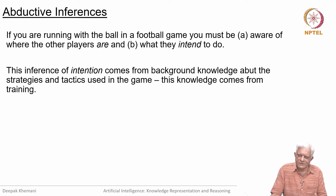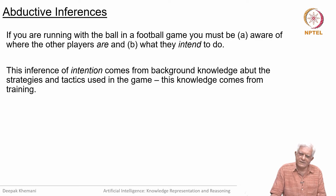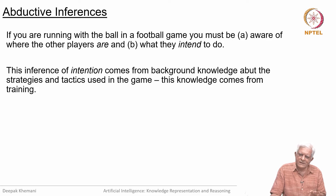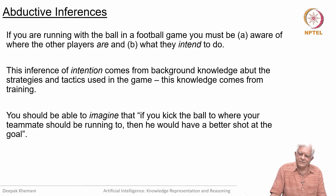This inference of intention comes from background knowledge. You must know what people do in football games — that is why games have coaches who study the moves of opposing teams and keep making strategies and plans. This kind of knowledge that a player uses on the field comes from training. You should be able to imagine that if you kick the ball to where your teammate is running, they would have a better shot at the goal. This ability to imagine is a key aspect of intelligent behavior.